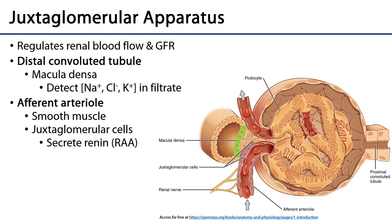The distal convoluted tubule passes by the renal corpuscle, and as it does, there is a specialized group of cells in the abutting wall called the macula densa. The macula densa, together with the afferent arteriole, forms a working apparatus called the juxtaglomerular apparatus, which is one of the greatest effectors of renal blood flow and glomerular filtration rate from within the kidney.